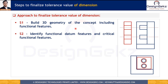The second step involves identification of datum features and critical functional features. Datums constrain some or all of the 6 degrees of freedom of the part based upon the function to deliver. In GD&T, the primary datum stabilizes or orients the part for assembly, whereas secondary and tertiary datums locate the part for assembly. Identifying datums as per the function is a very crucial step in finalizing the tolerance value.